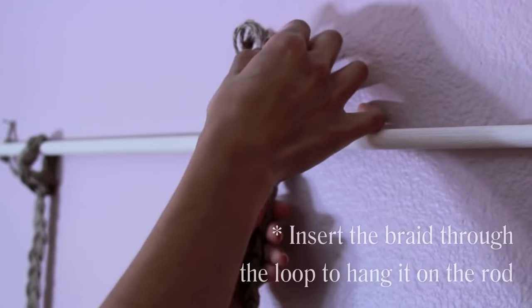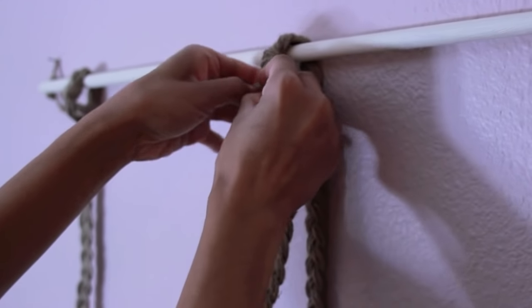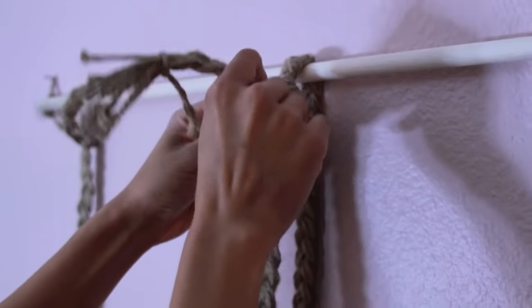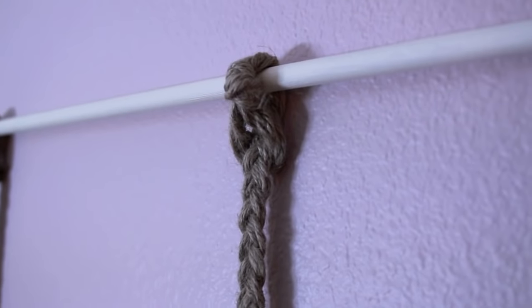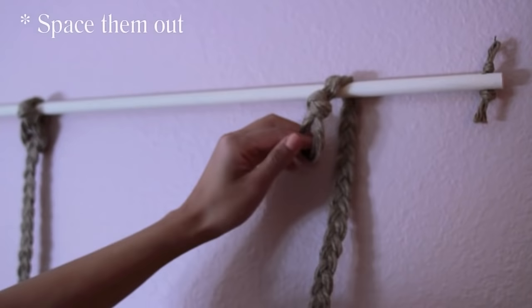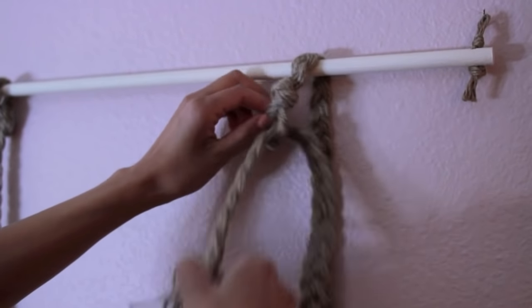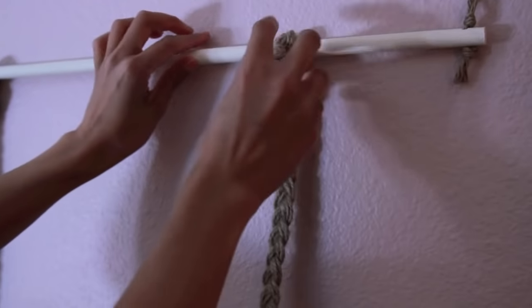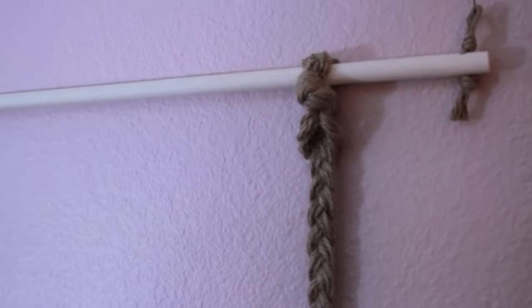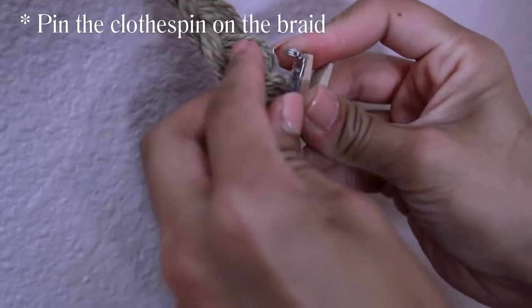So now we're going to assemble everything together. To attach the rope braid onto the dowel, just hang the braid over from the back side of the dowel and then insert the end of the braid into the loop to secure it. Now you can pin your clothespins onto the braid. Make sure to space them out how you like it.